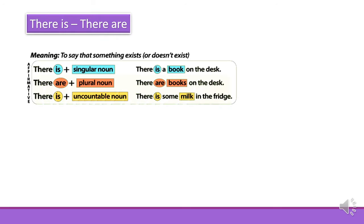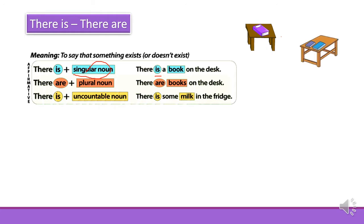There is and there are. We use there is and there are to talk about the existence of things. There is is followed by a singular noun — for instance, there is a book on the desk. There are is followed by a plural noun — for example, there are books on the desk.